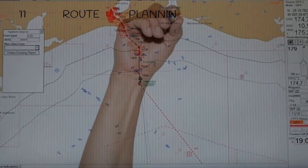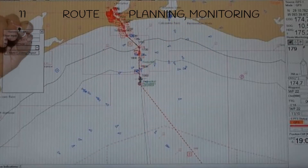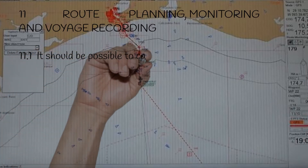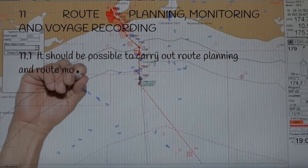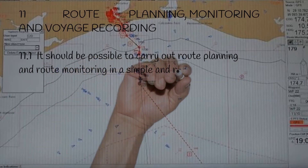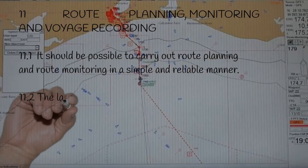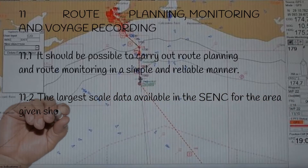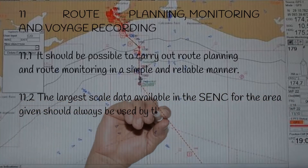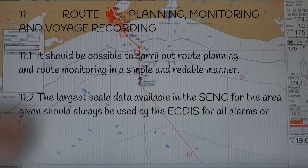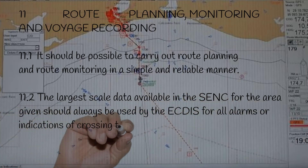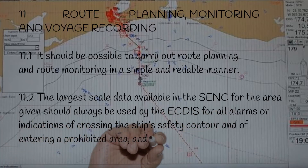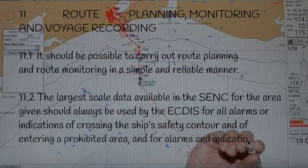Section 11: Route Planning, Monitoring, and Voyage Recording. 11.1. It should be possible to carry out route planning and route monitoring in a simple and reliable manner. 11.2. The largest scale data available in the SENC for the area given should always be used by the ECDIS for all alarms or indications of crossing the ship's safety contour and of entering a prohibited area, and for alarms and indications according to Appendix 5.